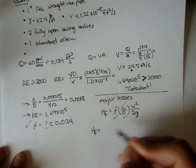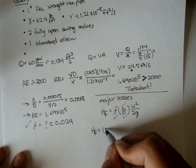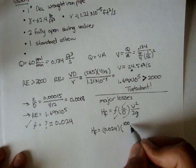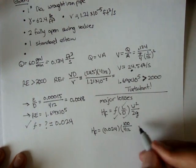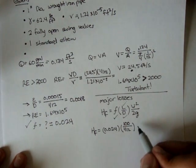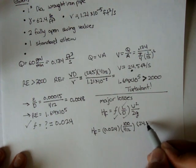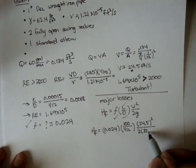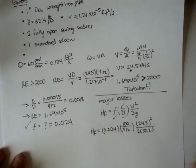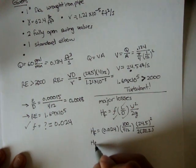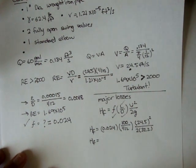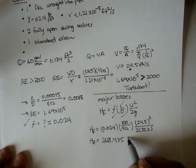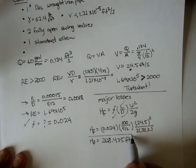So if we plug all that in - frictional factor 0.024, times the length 100 feet, over the diameter which is 1 twelfth of a foot, times 24.5 which is the average velocity squared, over 2 times 32.2, that's our gravity. If we plug all this in, we get that the major losses associated with this system is 268.435 feet. That's the major losses.